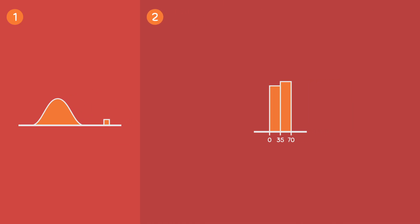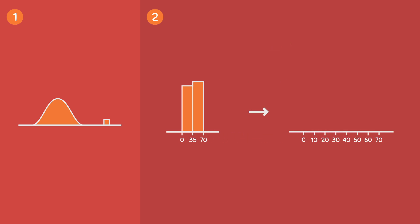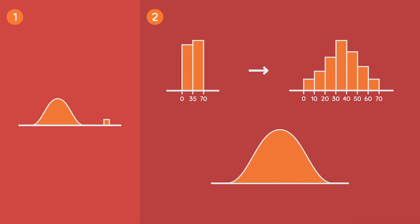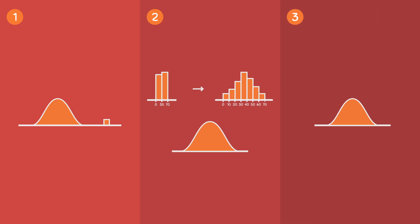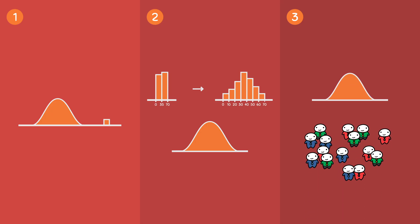Secondly, the picture of a histogram really depends on how many intervals you have. The more intervals you have, the better you can see the distribution of the data. But with a density curve, you are not limited by the number of intervals — you can actually have an infinite amount of intervals. And third, a smooth curve is generally easier to work with than a histogram, especially when you are working with very large populations.